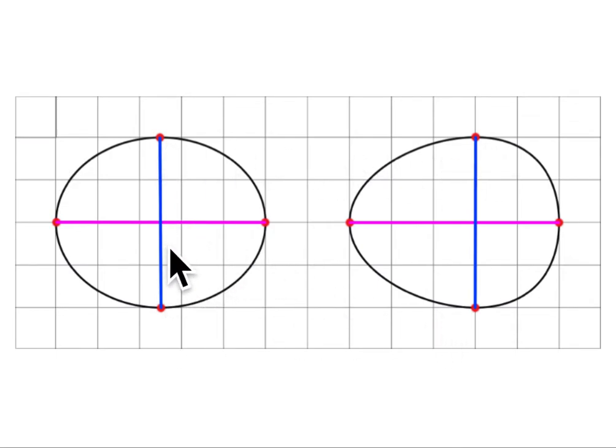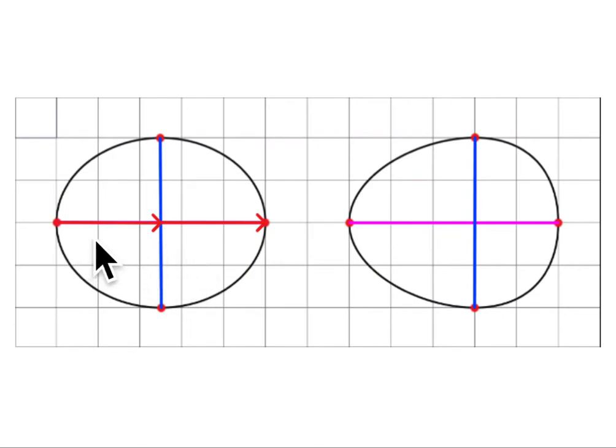On the left one, it's two and a half units from one end and two and a half units from the other end, so it's right in the middle. But on the right one, it's shifted over about a half a unit, so it's three units from the left and two units from the right. So those two ovals are not congruent; they are not the same.